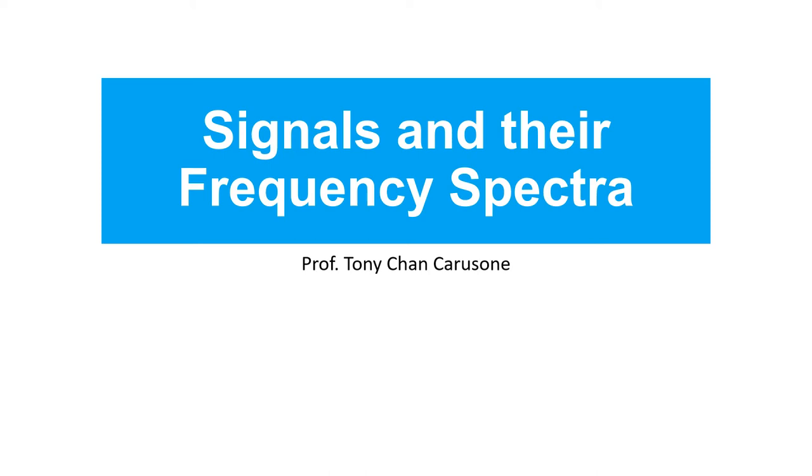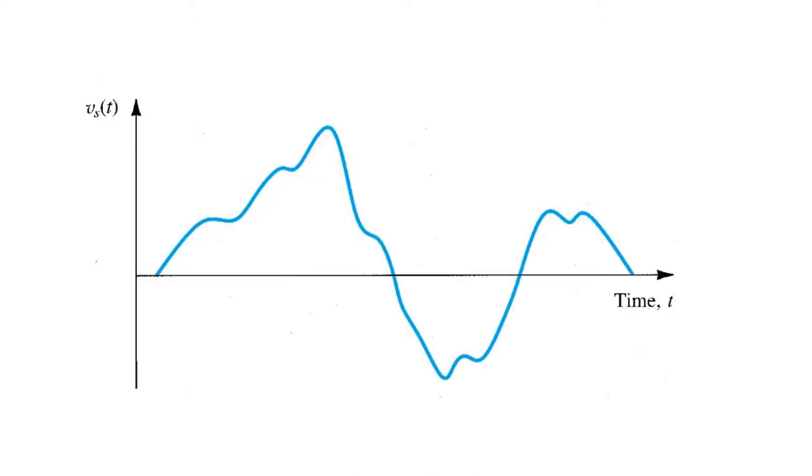This video provides a brief review of electronic signals and their frequency spectra. Electronic signals are voltages or currents that carry information that we care about.